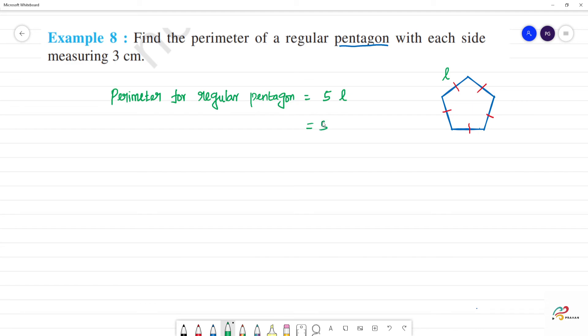That will be equal to 5 into 3 cm. So what do we get? That is 18 - sorry, 15. 5 times 3 is 15, that will be 15 cm.